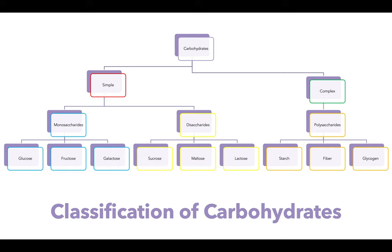Carbohydrates are classified as simple and complex, and this has nothing to do with their importance or whether they are good or bad — it has everything to do with their molecular structure. Our simple carbohydrates are our monosaccharides and disaccharides, and our complex carbohydrates are polysaccharides — our starches, fibers, and glycogen.